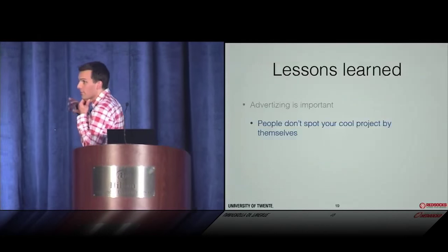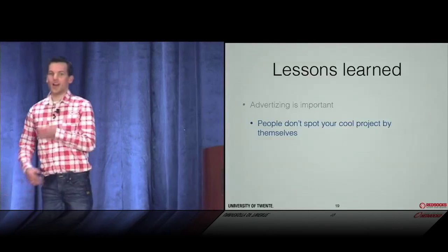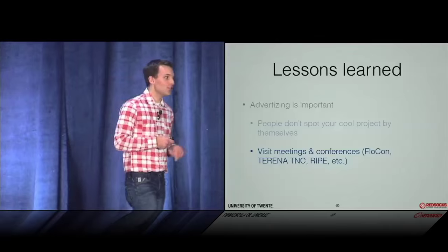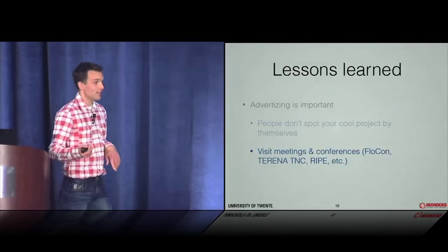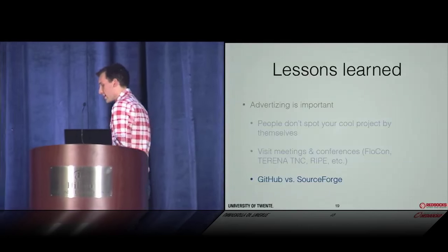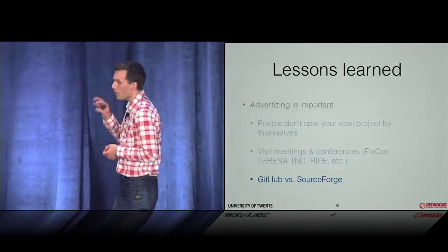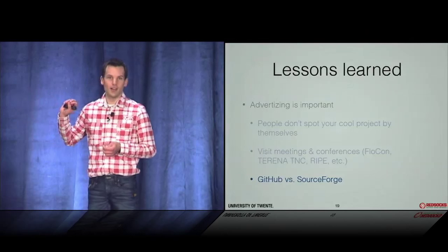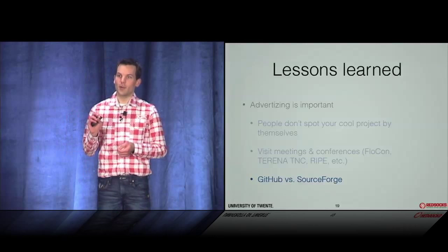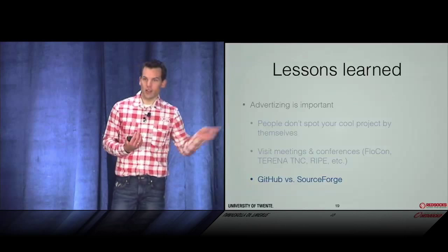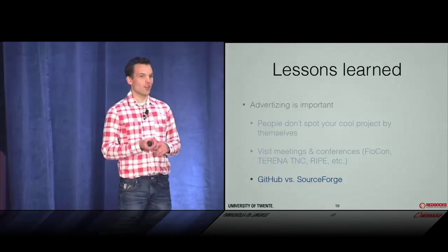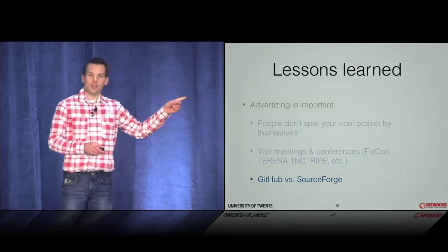Going to conferences is important — you can have a great project but nobody will find it on GitHub or SourceForge if you don't talk about it. That's why we're at FlowCon and attend TERENA TNC and RIPE meetings. Moving to GitHub last summer was also interesting: even though we don't have stable releases there yet, the number of people tracking the project has grown much larger than on SourceForge, whose interface is not the most user-friendly. If you have a project, definitely move to GitHub.